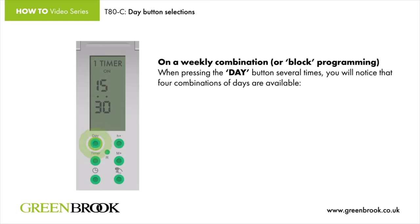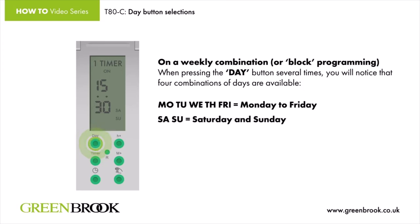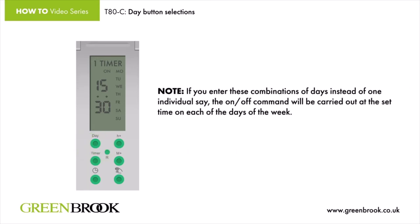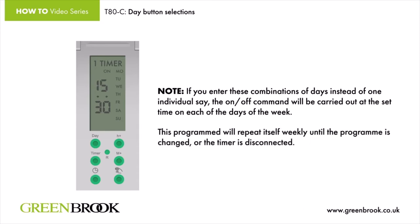The four day combinations are: Monday through Friday (Monday, Tuesday, Wednesday, Thursday, Friday); Saturday and Sunday; Monday through Saturday (Monday, Tuesday, Wednesday, Thursday, Friday, Saturday); and Monday through Sunday (all days). If you enter these combinations of days instead of one individual day, the on/off command will be carried out at the set time on each of the days in that combination. This program will repeat itself weekly until the program is changed or the timer is disconnected.